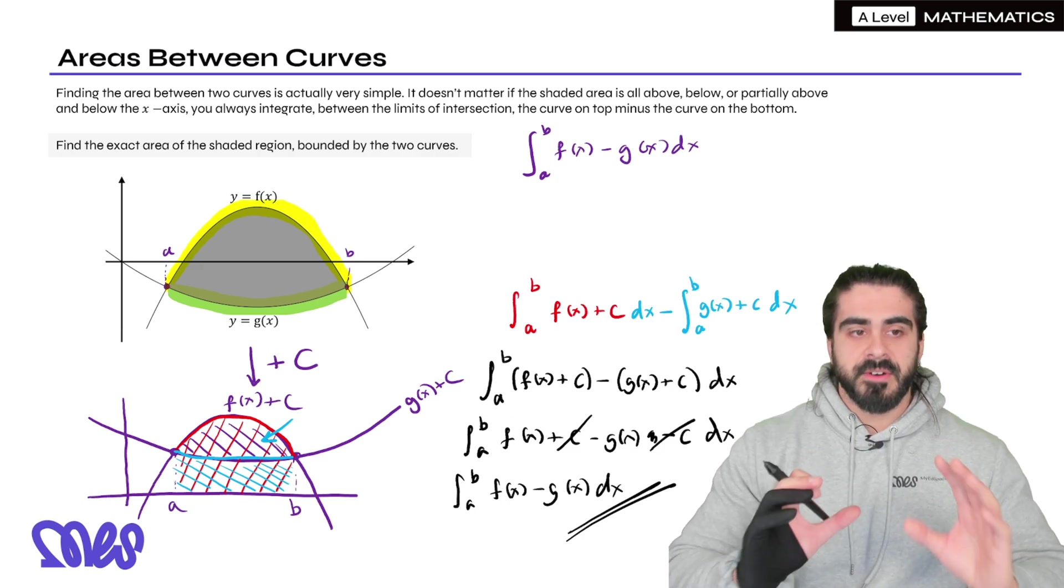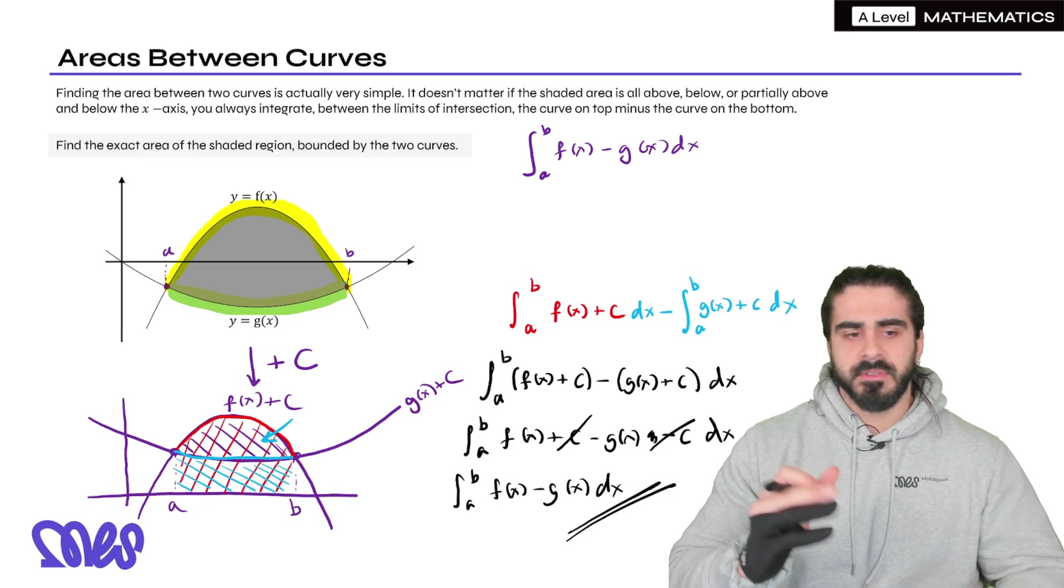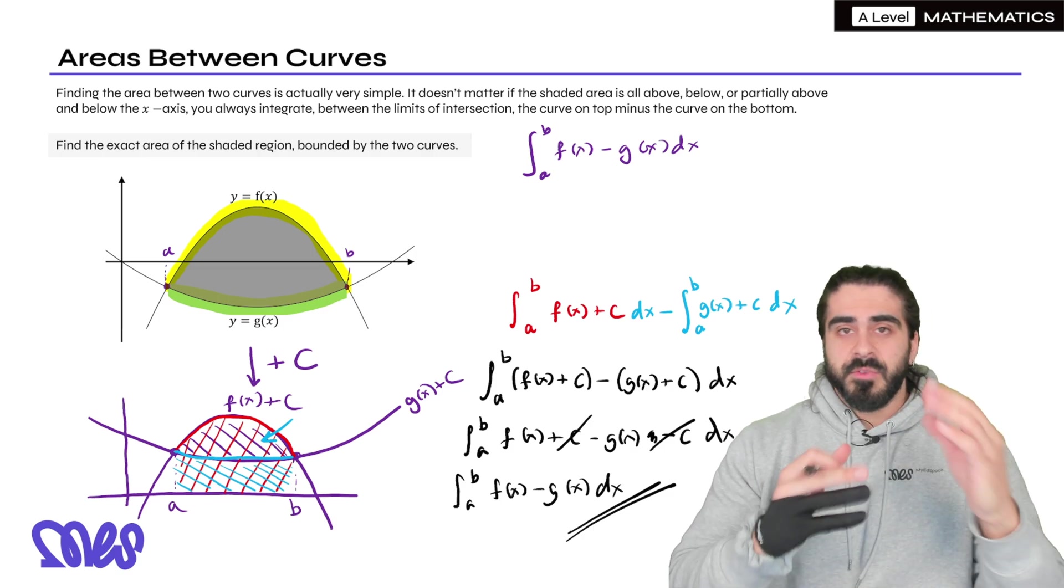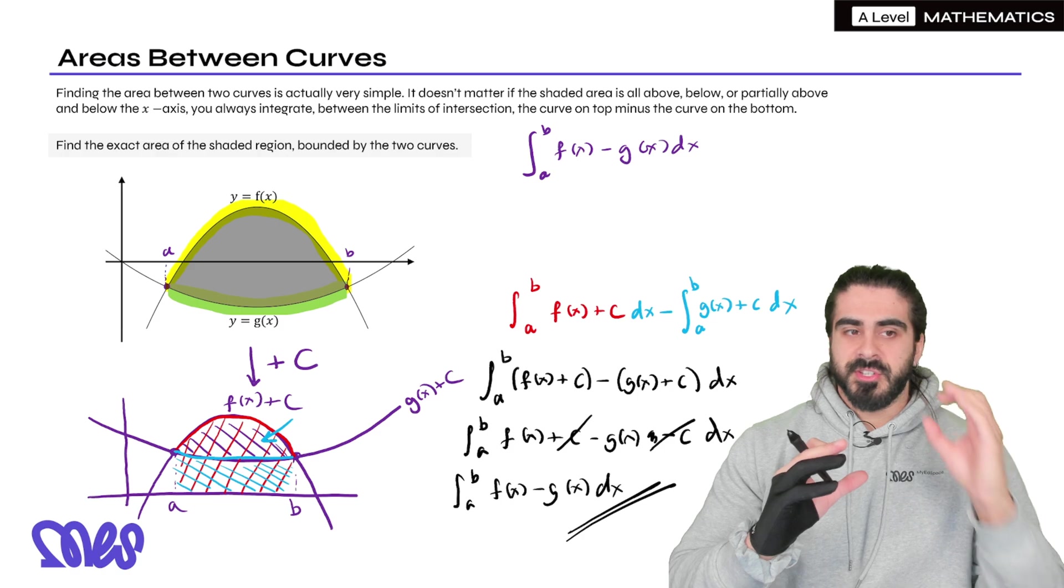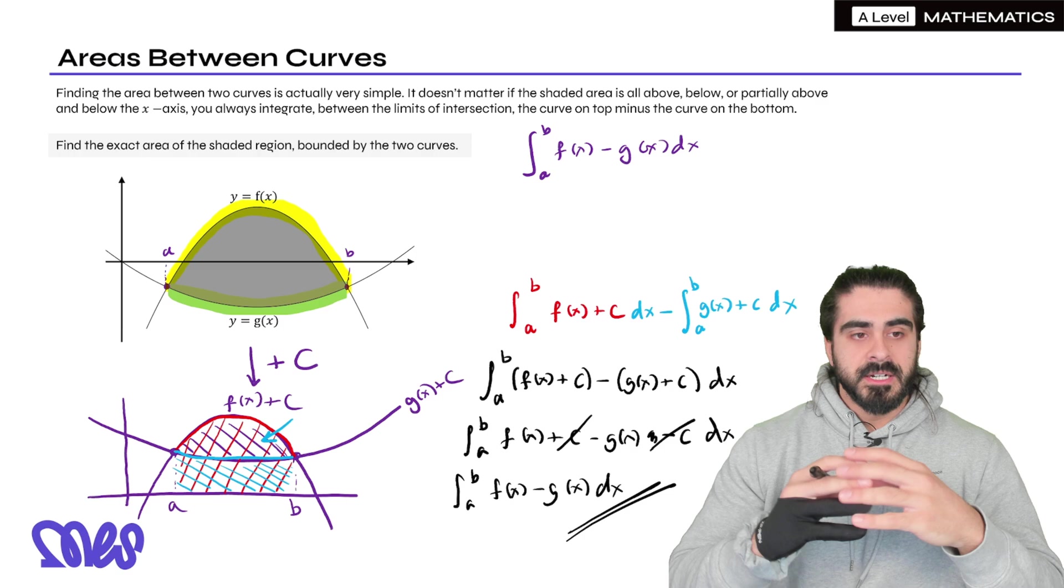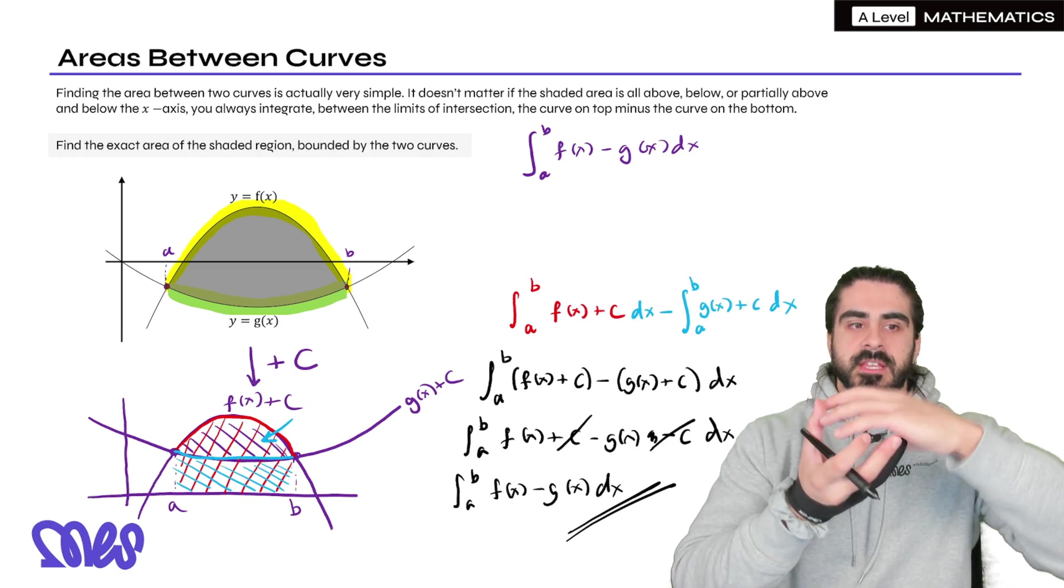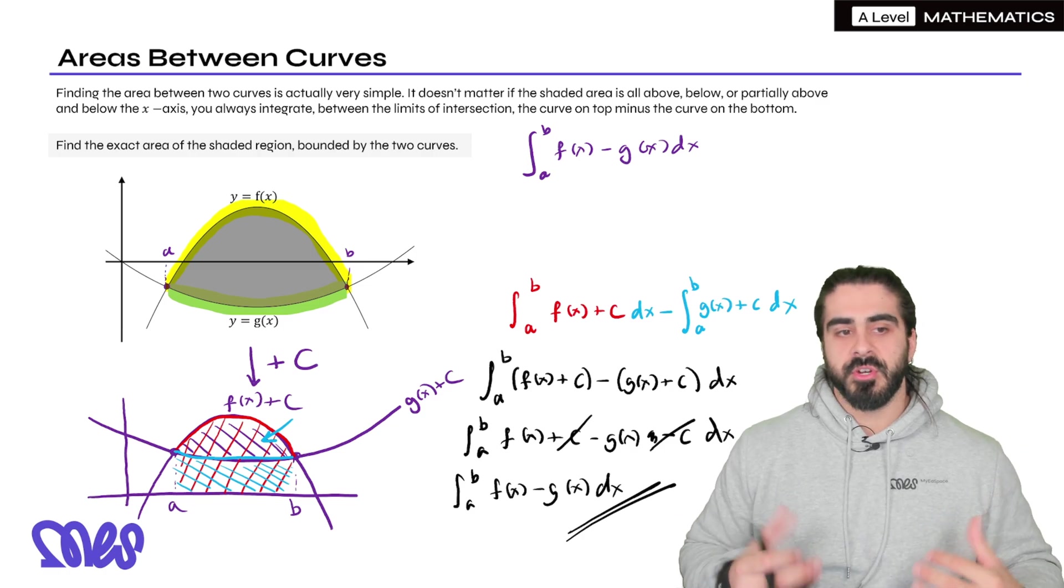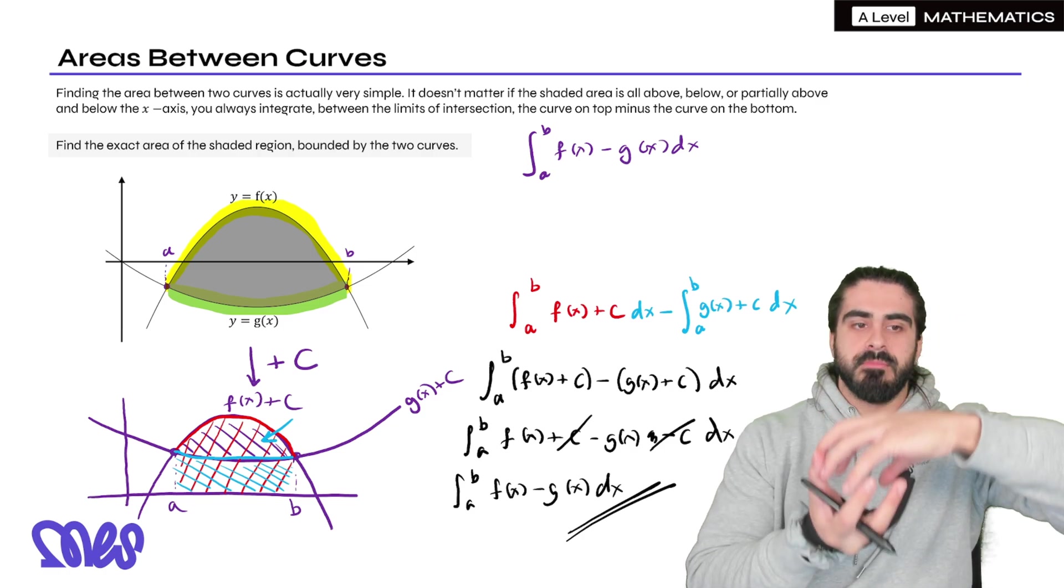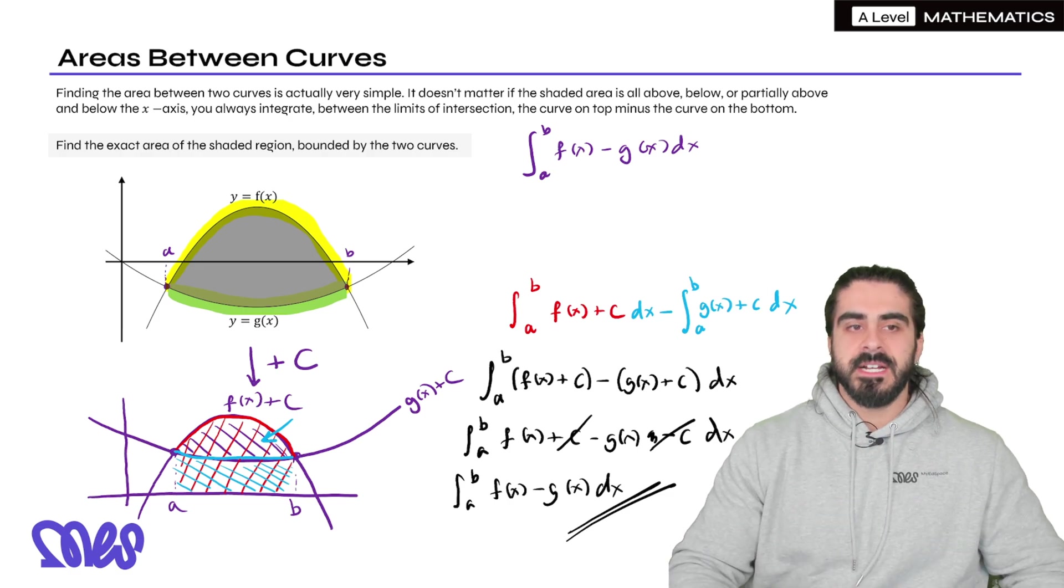And you might ask, okay, well what if the plus c's are different? Well, if you add a different constant to both of those functions, so say f(x) you add 10, and to g(x) you add 5. But we can't do that because then the area in between them will change. The gap between them will increase. So it has to be the same constant so that we're bringing all of it up by the same amount so that the area we're trying to find stays the same.